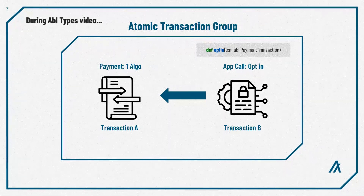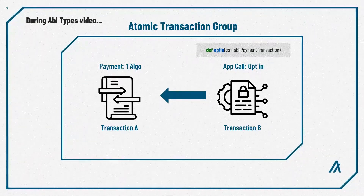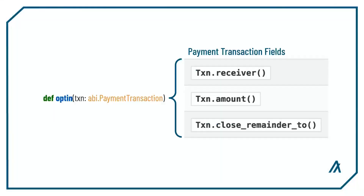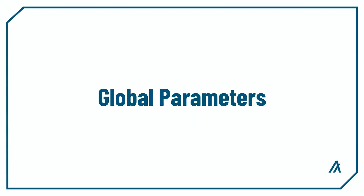If you remember the ABI types video, we talked about transaction types that are used to access information about other transactions in the same atomic group. Those transaction types have transaction fields as their attributes, and that's how you access other transactions with the ABI transaction types. There are also some global parameters that can get you information about the current state of the blockchain.